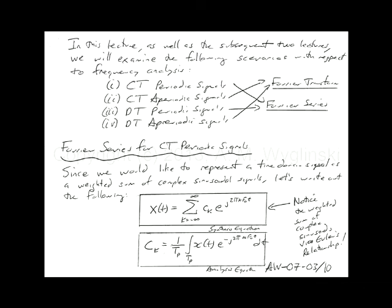e^(j2πkf₀t) can be represented by cos(2πkf₀t) + j·sin(2πkf₀t) — it's Euler's relation. There is actually a divide by 2 in there somewhere. That's where we get the sine and cosine, the sinusoidal contribution.